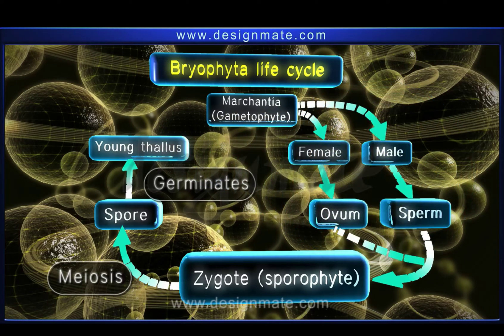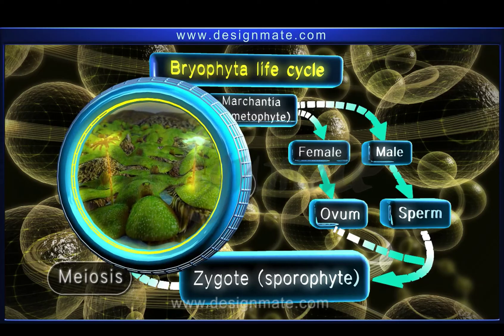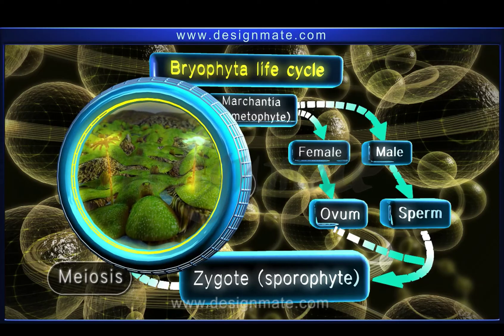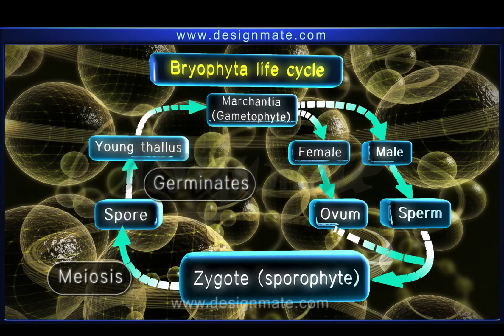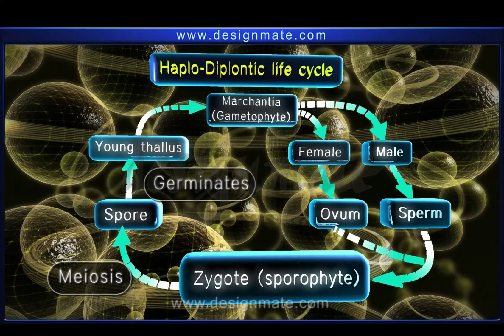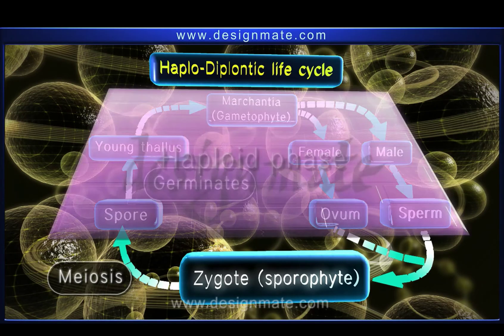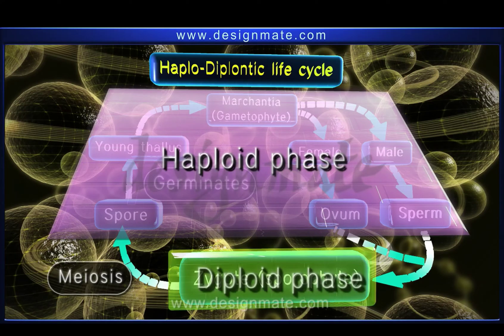The thalus grows into the fully grown gametophyte. This cycle is also called the alternation of generations. It is known as the haplodiplontic life cycle, which has a dominant haploid phase and a short diploid phase.